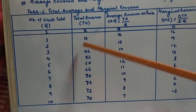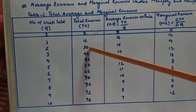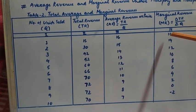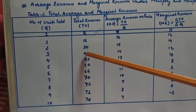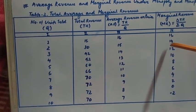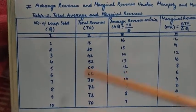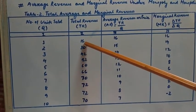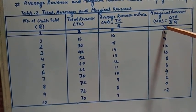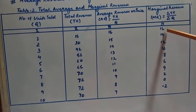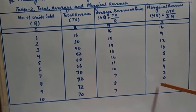When one unit is sold, total revenue is 16; when the second unit is sold, total revenue is 30, so 30 minus 16 gives marginal revenue of 14. Similarly, 42 minus 30 gives 12, and 52 minus 42 gives 10. Marginal revenue is declining from 16 to 14 to 12 to 10, and eventually reaches a negative value.